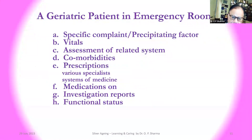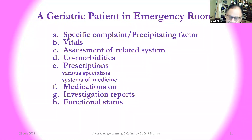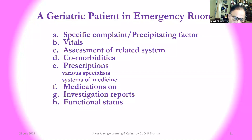What about the emergency room? In emergency, working in a corporate hospital — the first Apollo hospital — at least 30 percent of patients who come to the ER are above the age of 60. They may come for a specific complaint or something might be a precipitating factor: suddenly slipped while walking, suddenly started vomiting, had a spell of giddiness, or developed absolute lack of appetite. So people bring them even to the emergency room. What we do is quickly check the vitals and examine the related system, going through comorbidities and the various prescriptions.